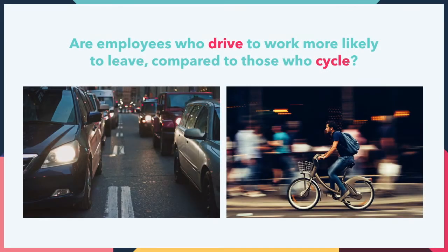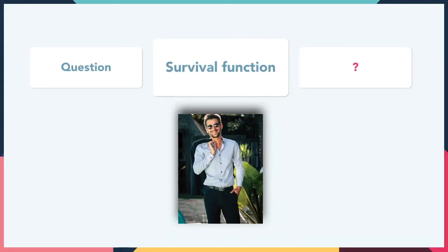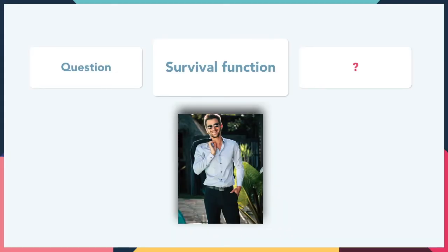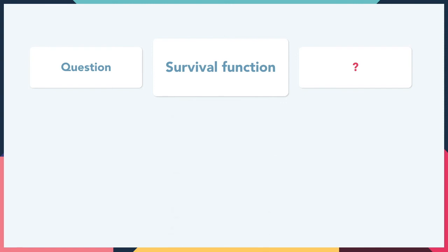We started out with a question: are employees who drive to work more likely to leave compared to people who cycle? By examining and comparing survival functions for different populations, we can start to gain insights into the drivers of churn. And indeed, it looks like Johnny's chances of surviving longer than 14 years are pretty slim. But remember, correlation is not causation. Ideally we would need to confirm these findings through a set of experiments. However, we can already use this information to act on the insights and help motivate change at the workplace.